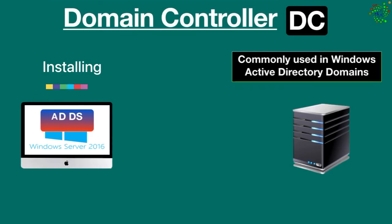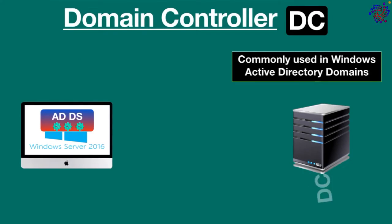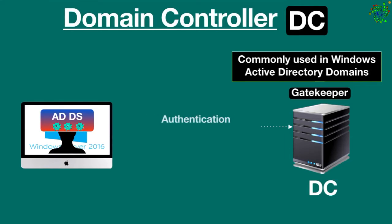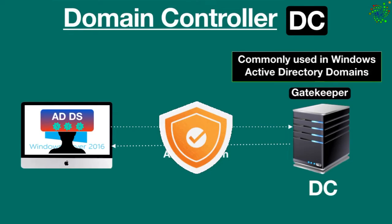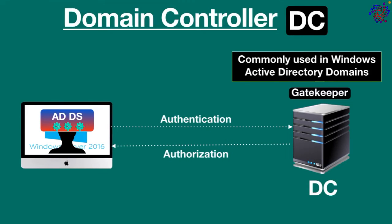How do we create a domain controller? When we install Active Directory Domain Services on a Windows server, after the installation the server becomes a domain controller, which then acts as a gatekeeper for user authentication and authorization to network resources within a domain. User authentication and authorization are critical for protecting the network infrastructure — it ensures that only trustworthy and relevant users access the network.